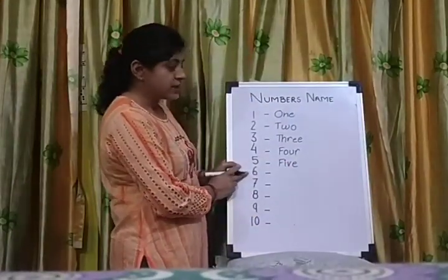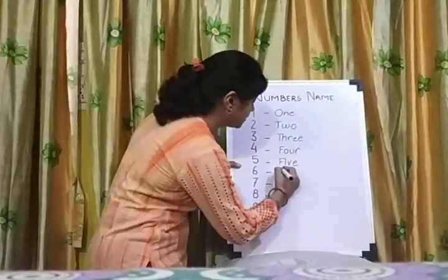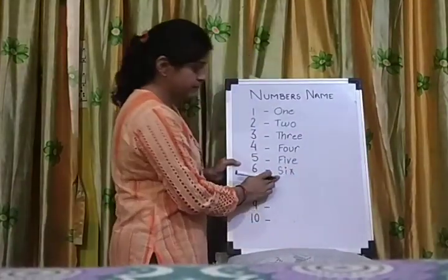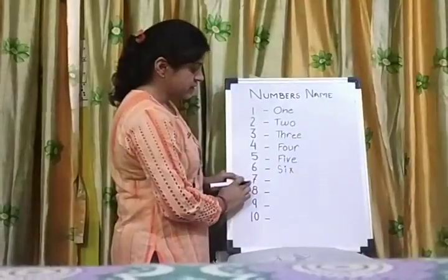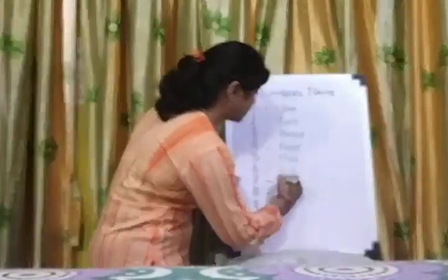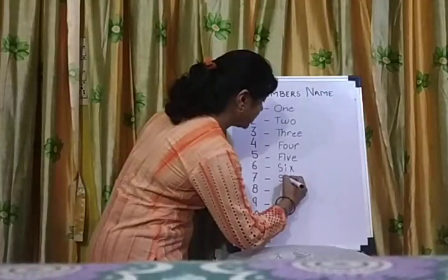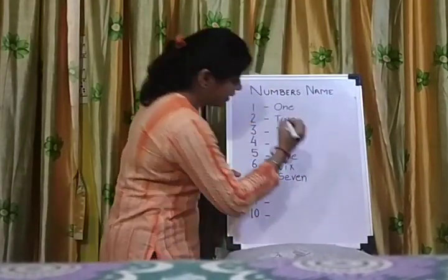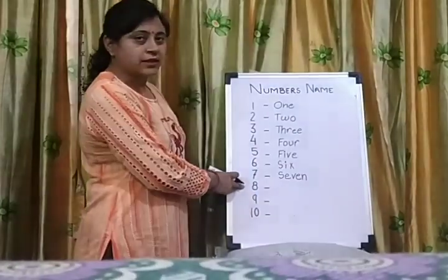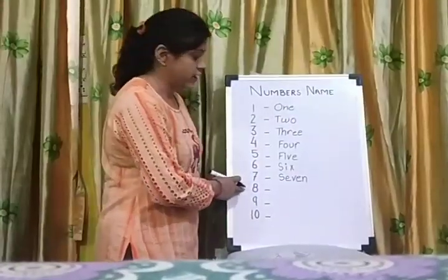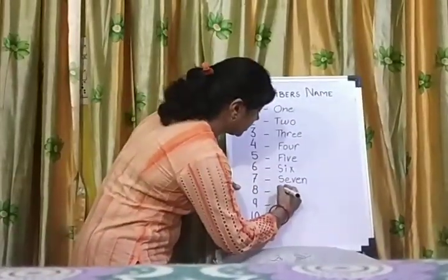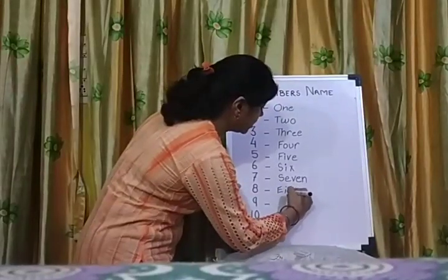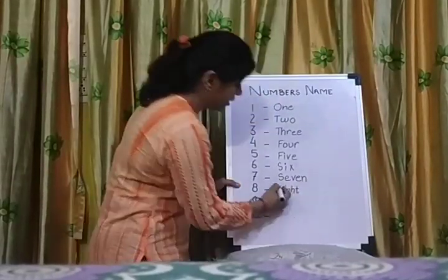This is six. The spelling of six is S-I-X. Six. This is seven. The spelling of seven is S-E-V-E-N. This is eight. The spelling of eight is E-I-G-H-T. Eight.